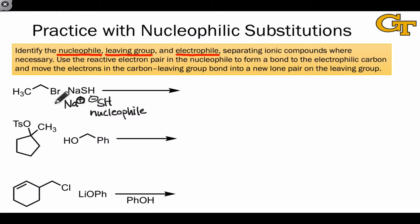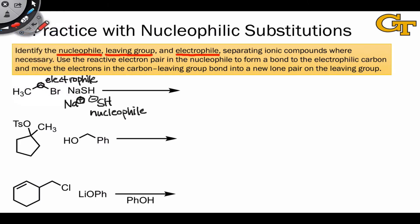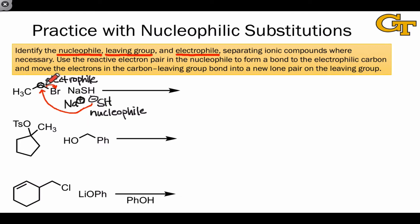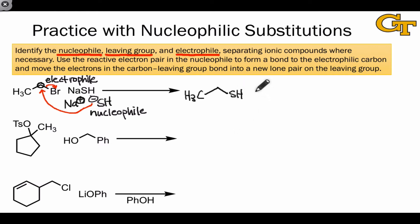Looking at the other reacting partner, ethyl bromide, we see an electronegative atom that has the potential to serve as a leaving group, and from this we can reason that the atom it's connected to — this carbon — is the electron-accepting carbon, or electrophile. We've now identified the three key components. The product contains the ethyl group linked to SH, and it's also worthwhile to draw the byproduct, Br-, the conjugate base of the leaving group.